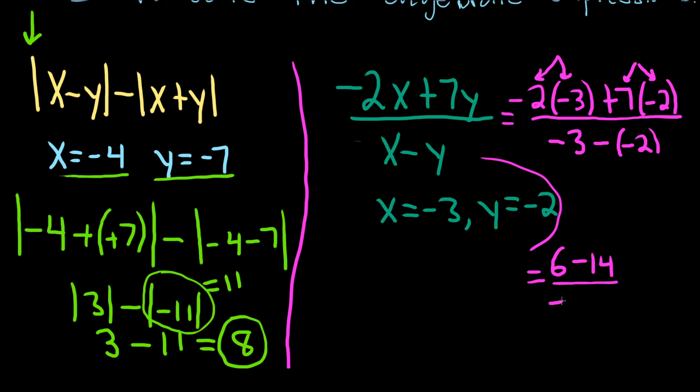On the bottom we have negative 3, and then the negative and the negative here are going to turn into a positive 2. 6 minus 14, that's going to give us negative 8. And on the bottom, negative 3 plus 2 is negative 1.